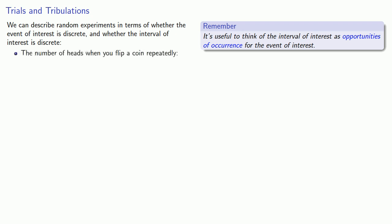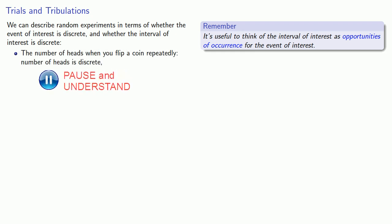For example, the number of heads when you flip a coin repeatedly. The number of heads is discrete. Moreover, since the coin can only land heads or tails when you actually flip it, the opportunities of occurrence for the event is another discrete quantity: the number of flips.